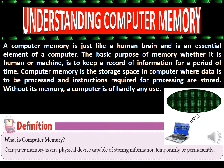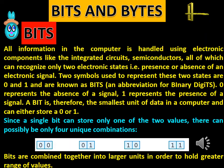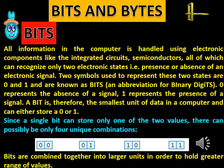Bits and Bytes. All information in the computer is handled using electronic components like integrated circuits and semiconductors, all of which can recognize only two electronic states — the presence and absence of an electronic signal. Two symbols used to represent these two states are 0 and 1, and are known as Bits, an abbreviation for binary digits. 0 represents the absence of a signal and 1 represents the presence of a signal. A bit is therefore the smallest unit of data in a computer and can either store a 0 or 1. Since a single bit can store only one of the two values, there can possibly be only four unique combinations.